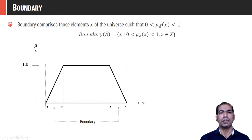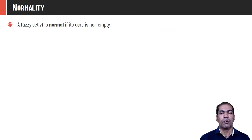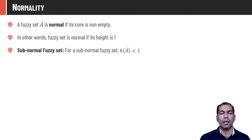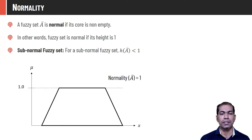A fuzzy set Ā is called normal if it has a non-empty core — there must exist at least one element whose membership value is exactly 1. In other words, if the height of the fuzzy set is 1, it is a normal fuzzy set. For a subnormal fuzzy set, the height is less than 1. Crossover points of Ā are the points x ∈ X at which the membership value is exactly 0.5: crossover(Ā) = {x | μ_Ā(x) = 0.5}.